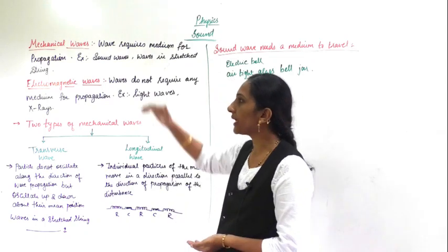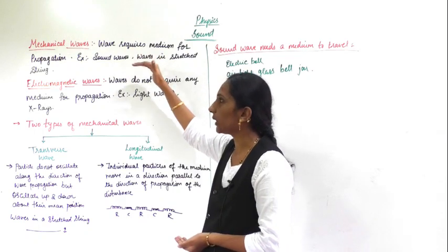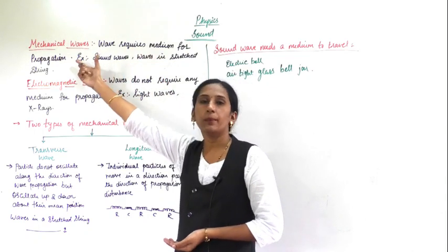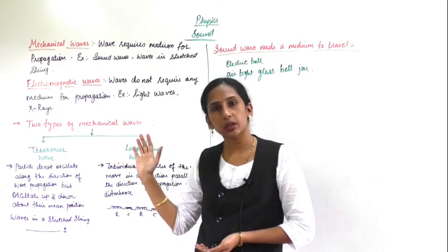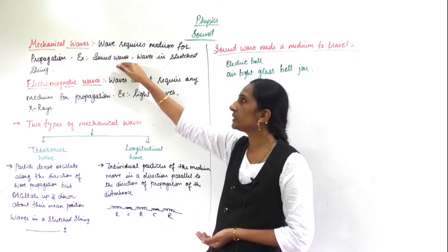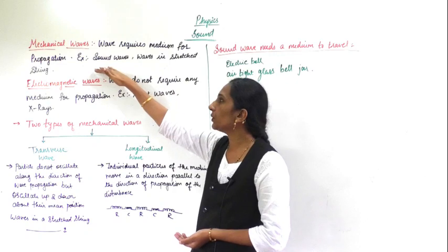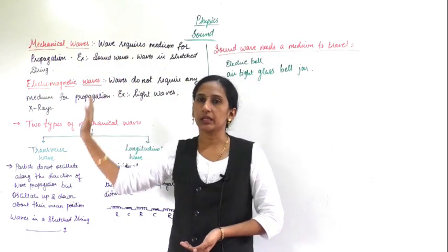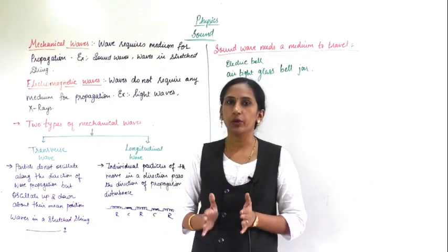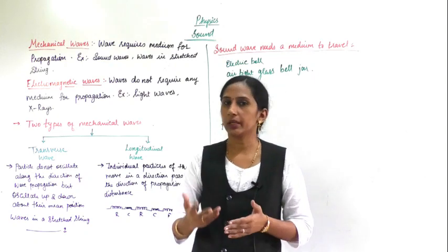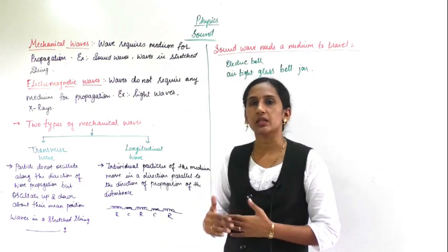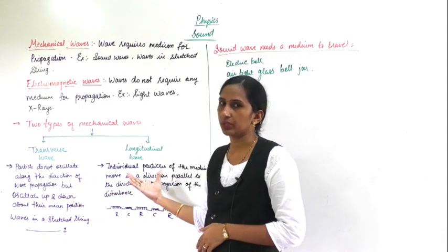As you have understood, sound wave is a mechanical wave because it needs a medium for propagation — so it is an example of a mechanical wave. Now, mechanical waves are also of two types: transverse waves and longitudinal waves.